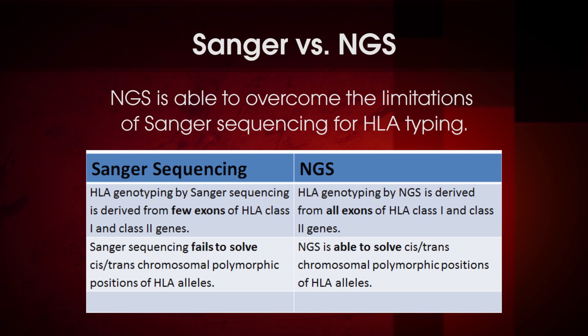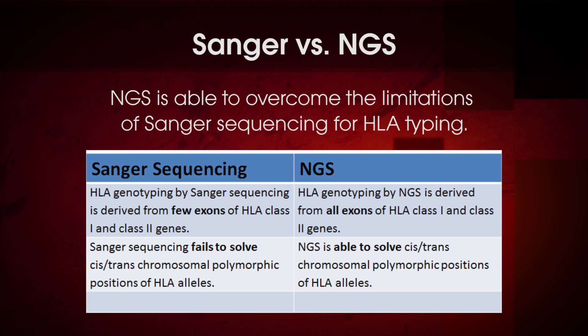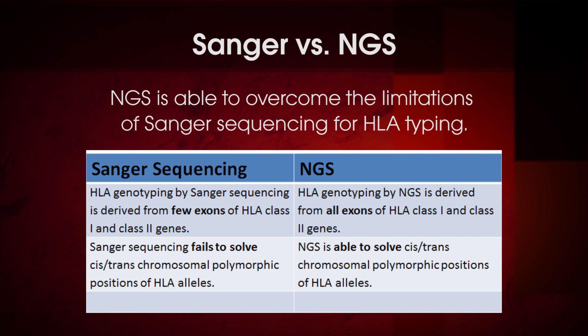HLA typing information by NGS is derived from all exons of HLA class 1 and class 2 genes, and NGS is able to solve cis and trans-chromosomal polymorphic position of HLA alleles. These two advantages of NGS over Sanger sequencing allow NGS to produce final HLA typing results without need for the additional coding provided by the National Marrow Donor Program, or NMDP.